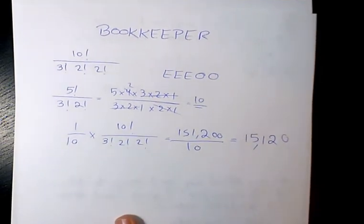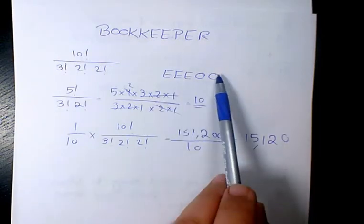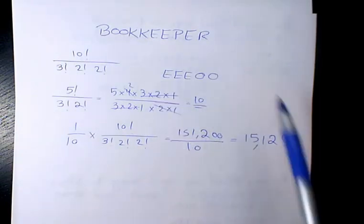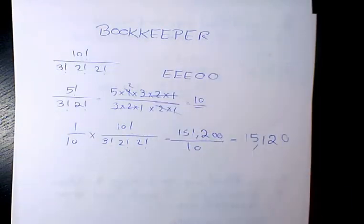15,120 different ways to write the word bookkeeper so that the vowels appear in alphabetical order. So this is going to be the final answer.